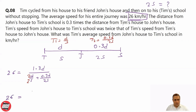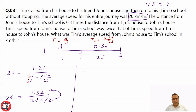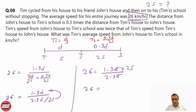So 26 equals 1.3D divided by (2D + 0.3D) / 2S, which simplifies to 26 = 1.3D / (2.3D / 2S). Then 26 = (1.3D × 2S) / 2.3D, and D cancels out, giving 26 = 13/23 × 2S.